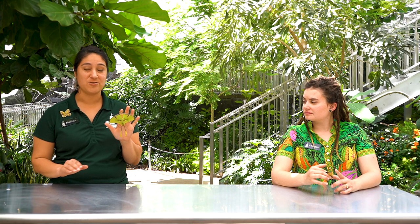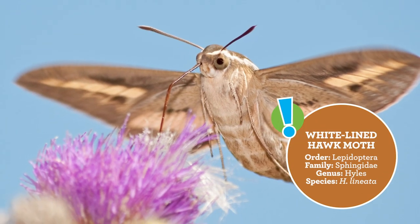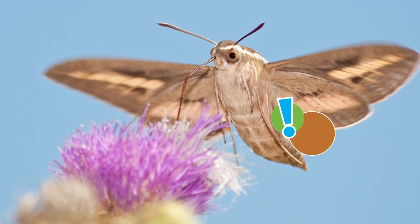Generally, we can find moths active at nighttime. And I say generally because insects are so diverse that there's usually one or two that break the rules. For moths, we have a family called sphinx moths or hawk moths, and you can find a couple of species here in Utah. You'll actually see those during the daytime — you might think you're looking at a hummingbird at first, because they are a very large moth that hovers and flies very quickly, in a similar pattern to hummingbirds.